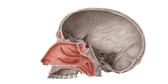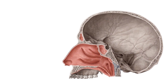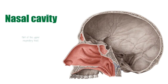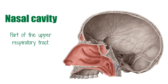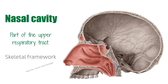The nasal cavity is part of the upper respiratory tract, located above and behind the nose. The nasal cavities are elongated wedge-shaped spaces with a large inferior base and a narrow superior apex. They are held open by a skeletal framework consisting mainly of bone and cartilage.